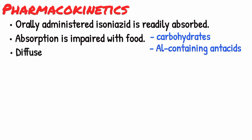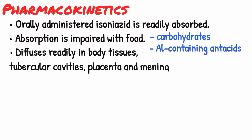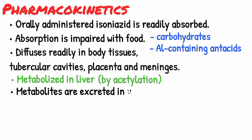It diffuses readily into all body tissues, tubercular cavities, placenta, and meninges. It is extensively metabolized in the liver, with the most important pathway being acetylation, and metabolites are excreted in urine.